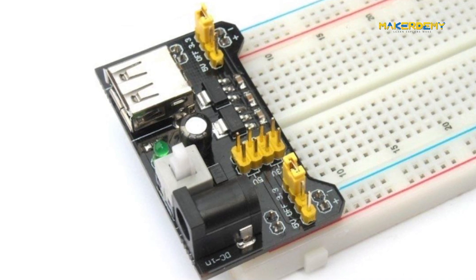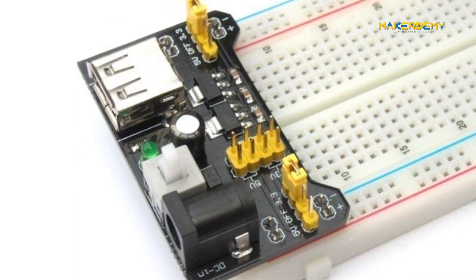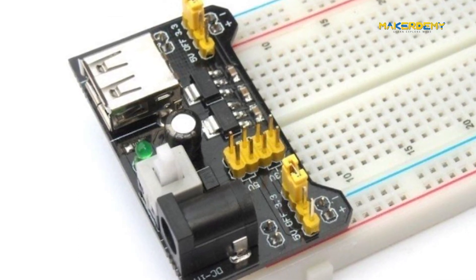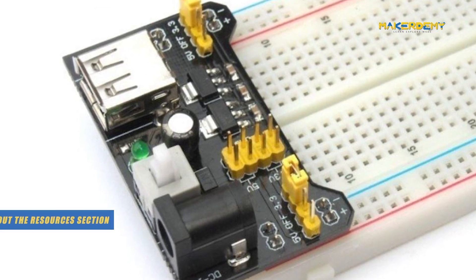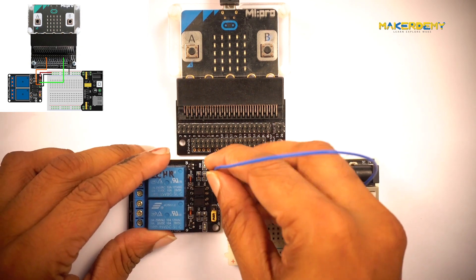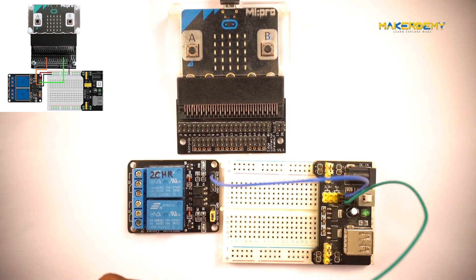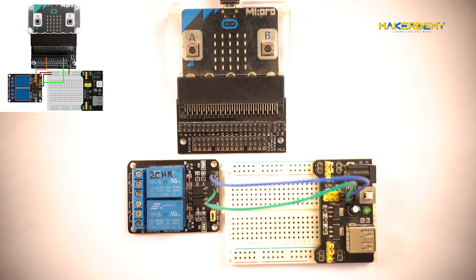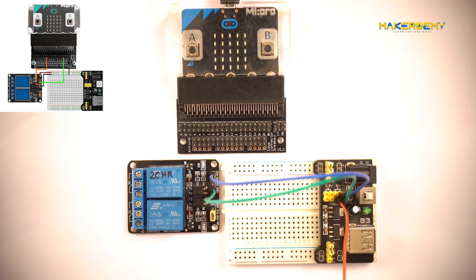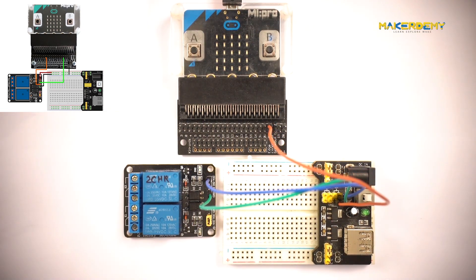Here we are going to use a popular external power supply board called the MB102 breadboard power supply. To know more about this power supply and why we use it, please check out the links in the resources section. Connect the 5V pin of the power supply to the VCC pin of the relay module, then connect the GND pin of the power supply to the GND pin of the relay module. Now we will connect a jumper wire from another GND pin of the power supply to 0V of the micro:bit. So now the micro:bit, the relay module, and power supply all share the same GND pin.